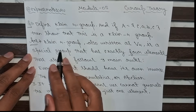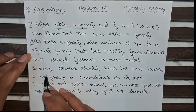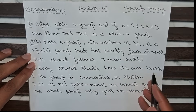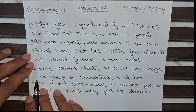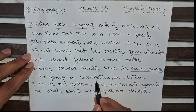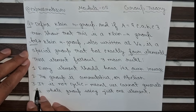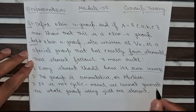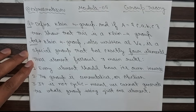For this Klein four-group, the elements follow three main rules. The first rule is every element should have its own inverse. The second one is the group is commutative, or abelian. The third one is it is not cyclic, meaning we cannot generate the whole group using just one element.